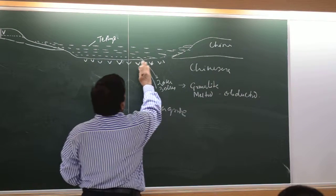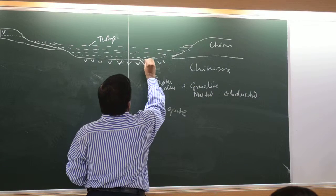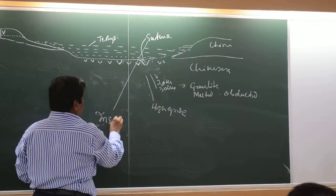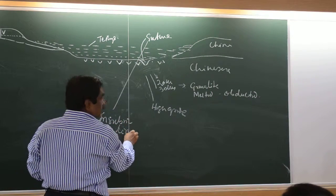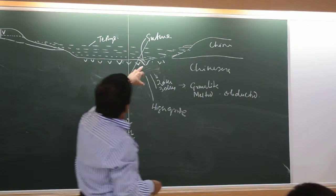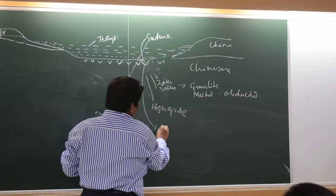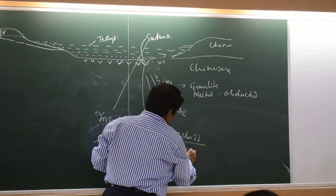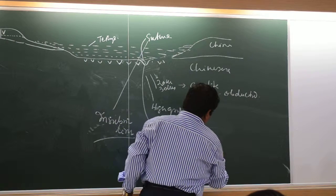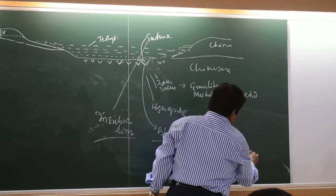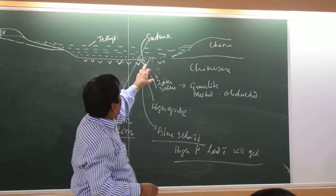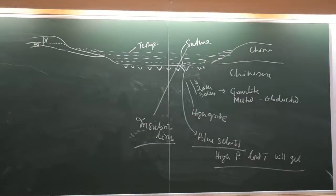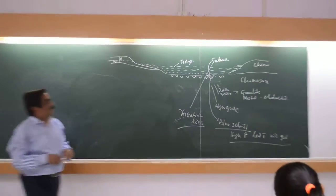So you have a very high grade garnet-Cpx here. But as you come to the surface here, this place is called a suture, or insubric line — where these two plates suture, they come together. So along this place you will get blueschist metamorphism. Blueschist metamorphism means high pressure, low temperature. Tell me why it happens — why will high pressure, low temperature garnet-Cpx be along this insubric line?